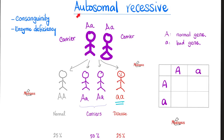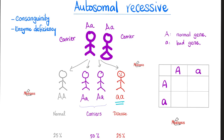Albinism is an autosomal recessive disease. Anytime you hear of autosomal recessive, odds are there is an enzyme deficiency. The deficient enzyme in albinism is called tyrosinase. Here is a very simplified diagram — reality is far more complex. Tyrosine converts to dopa via tyrosine hydroxylase, then dopa converts to melanin via tyrosinase. That is the key enzyme to focus on.